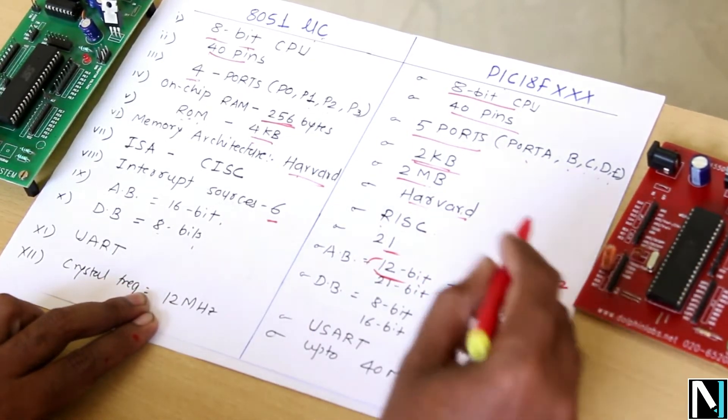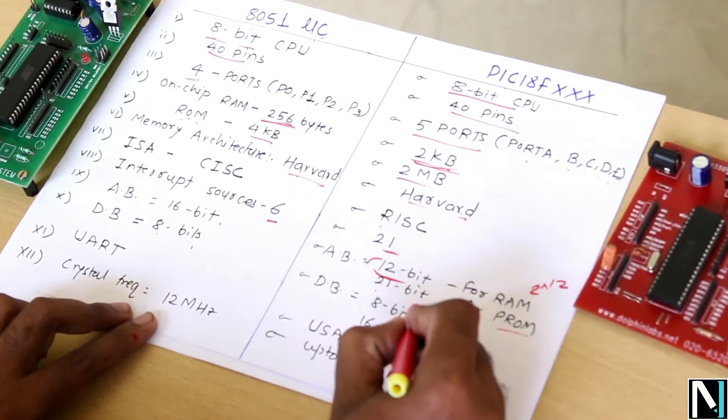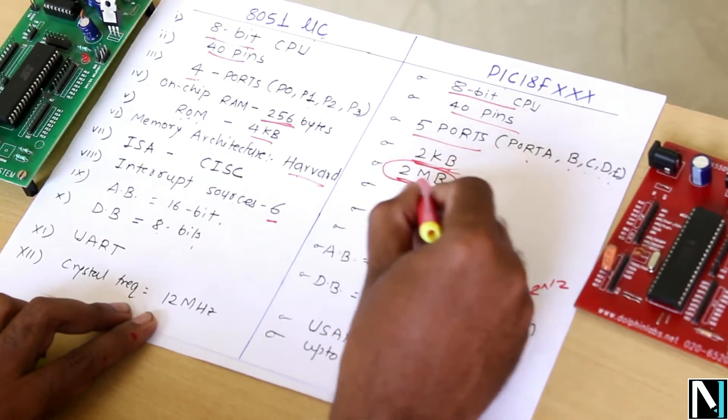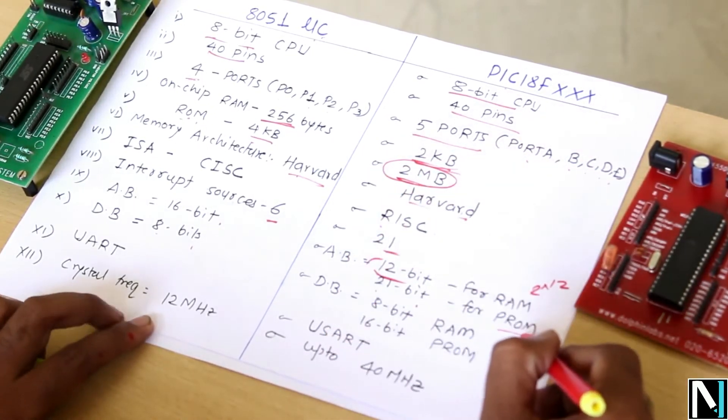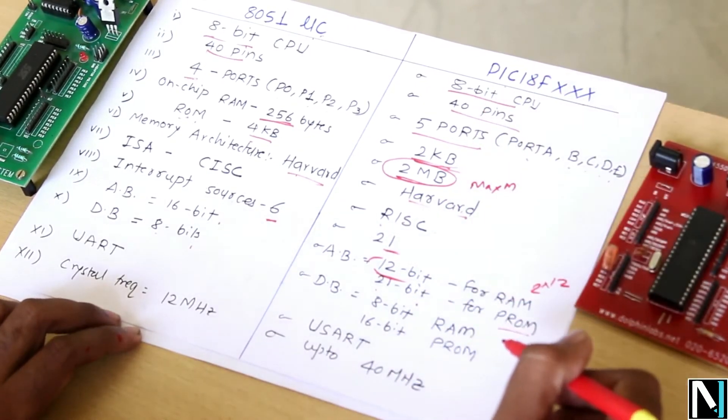And 2 raise to 21 bit will give rise to 2 megabytes of internal programmable ROM that can be accessible. This is the maximum memory that can be accessed by PIC 18F microcontroller.